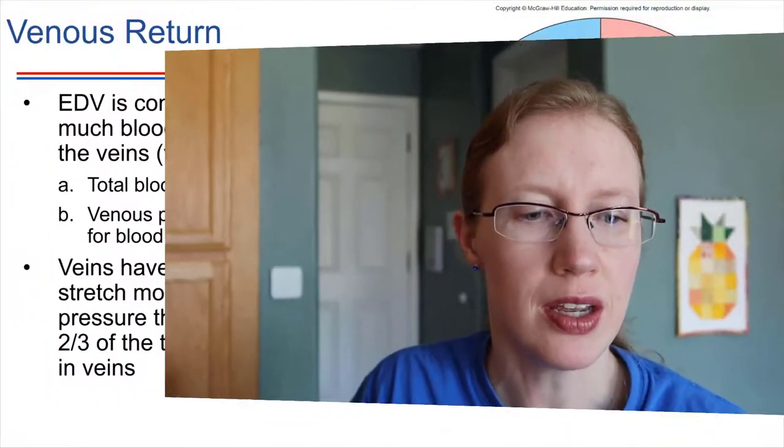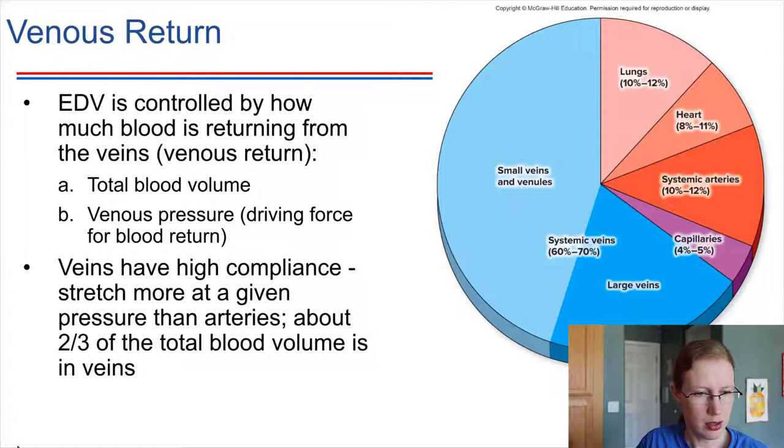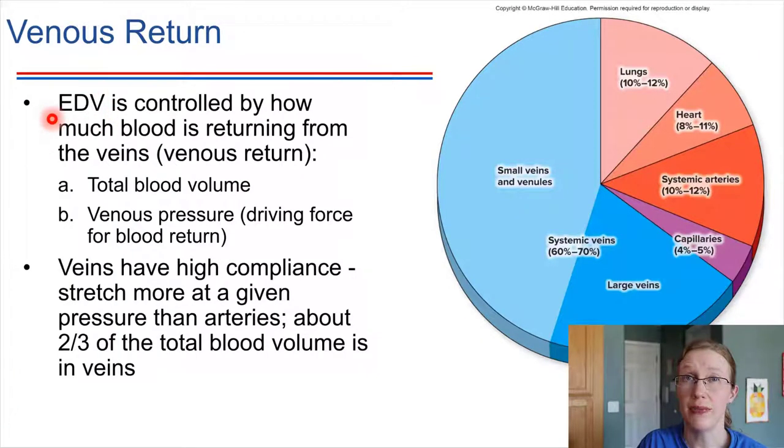We said in the last video that the stroke volume is influenced by how much blood is in the ventricle right before it contracts. That's called the end diastolic volume. We're going to abbreviate that EDV. Anytime you see this, this is going to be end diastolic volume.